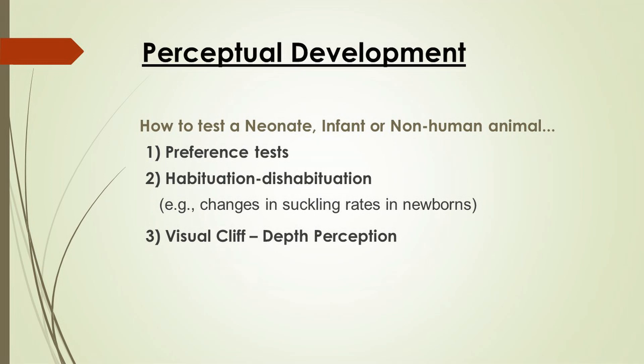Habituation-dishabituation procedures have been used with children only a day or so old — you need to modify the procedures a little bit — and they have shown that newborns can tell the difference between voices. To test newborns or neonates, researchers have placed sensing devices in the nipples of bottles. The newborn will suckle at a steady rate when listening to a voice that doesn't change over time. However, if the voice changes to that of another person, the suckling rate will change, indicating the child can distinguish between the two different voices.